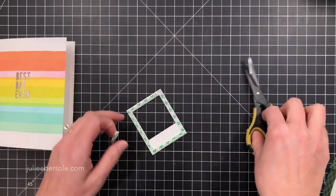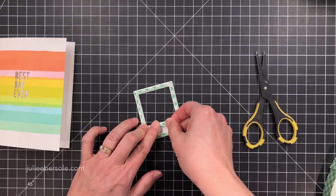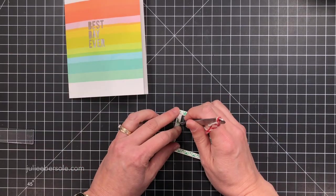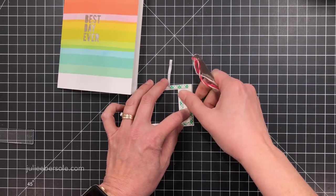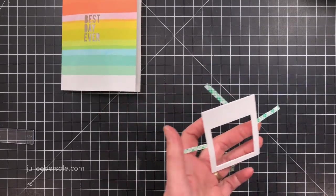And then I also die cut one of those Polaroid frames. This is the larger one out of more Neenah Solar White. And I'm going to add some foam tape all around the perimeter, just cut some skinny strips.